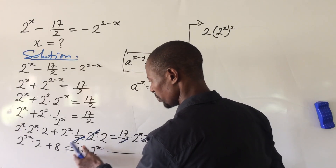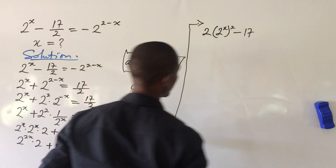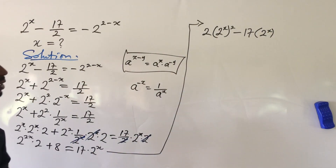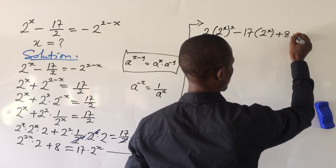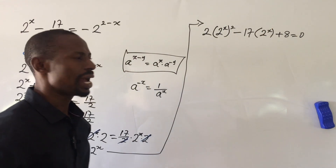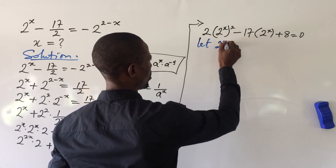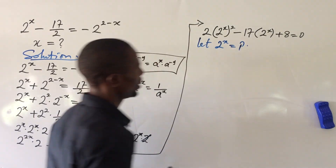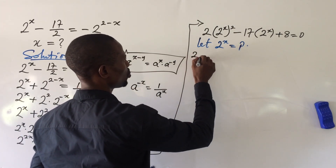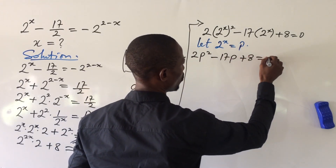We move the 17 times 2^x term to the left-hand side, giving: 2 times (2^x)^2 minus 17 times 2^x plus 8 equals 0. Since we have 2^x appearing repeatedly, we substitute p = 2^x. The equation then becomes the quadratic: 2p² minus 17p plus 8 equals 0.